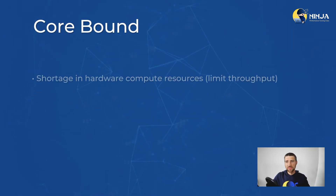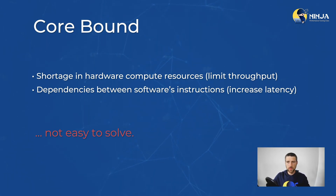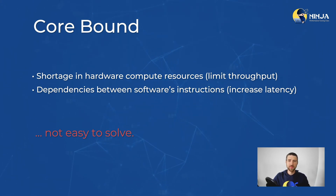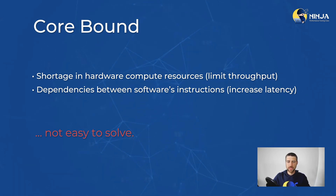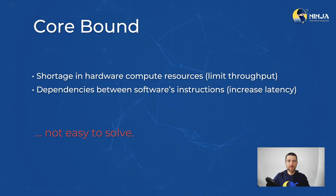Sometimes, given problems similar to the one I just described, there is not much you can do. If your software must execute a lot of divisions, your best bet would be to simply upgrade the CPU to one that has more dividers, or maybe offload the computation to an accelerator. Data flow dependency chains are also not easy to solve either, and may require significant rewrites of the algorithm.